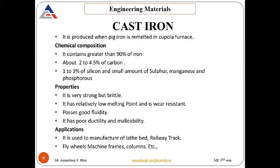After wrought iron, there comes cast iron. Cast iron is produced from pig iron — pig iron is remelted in the cupola furnace and we get cast iron. It contains 90% iron, 2 to 4.5% carbon, 1 to 3% silicon, and then small percentages of sulphur, manganese and phosphorus.